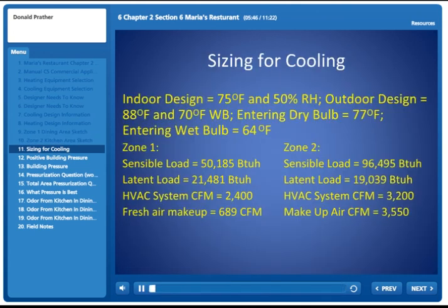Sizing for cooling. Indoor design equals 75 and 50% relative humidity. Outdoor design equals 88 degrees and 70 degrees Fahrenheit wet bulb. Entering dry bulb is 77 degrees Fahrenheit. Entering wet bulb is 64 degrees Fahrenheit. Zone 1 is fairly straightforward.